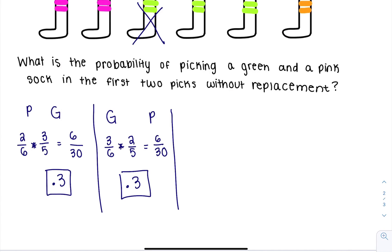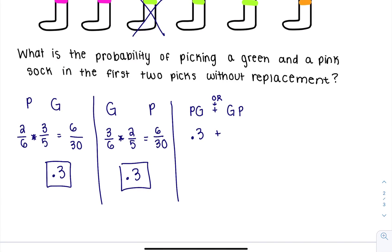Those are the two different ways I can wear a green and a pink sock. So in total, I'd have to add either I draw a pink-green or I draw a green-pink. This is kind of an or problem, which means I take 0.3 plus 0.3, which is 0.6.